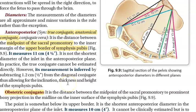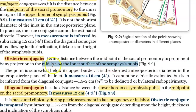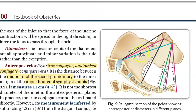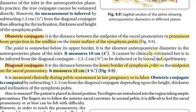The obstetric conjugate is the distance from the midpoint of the sacral promontory to the prominent bony projection on the inner surface of the pubic symphysis in the midline. It measures 10 centimeters, but it cannot be clinically estimated directly. You infer it from the diagonal conjugate by deducting 1.5 to 2 centimeters, or by lateral radiopelvimetry.